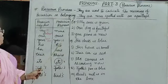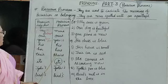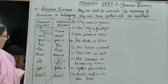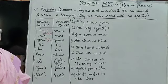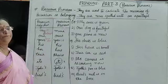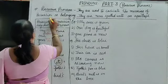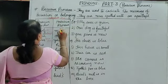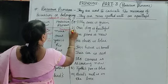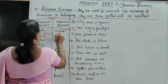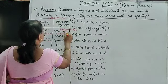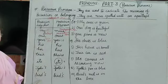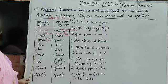Now let us come to the list of possessive pronouns: mine, ours, yours, his, hers, theirs. Note that there is no 'its' in possessive pronouns, and no Jyothi's or bird's either. Possessive pronouns also have another name: absolute pronouns or independent pronouns. These are used without a noun, whereas possessive adjectives are used with a noun.